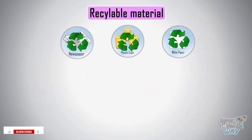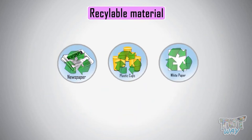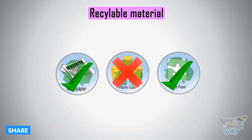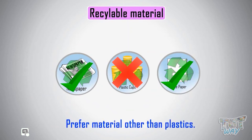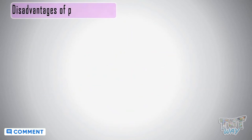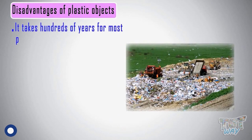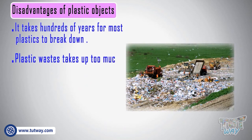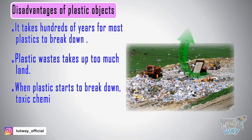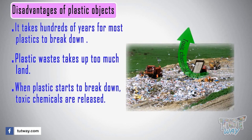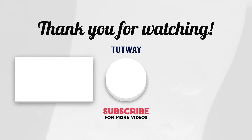Kids, we should always prefer recyclable materials over non-recyclable materials. Among recyclable materials, we should also prefer materials other than plastics, as plastics take a long time to break down and release toxic chemicals into the environment, which is very harmful for the earth. So always prefer recyclable materials and materials other than plastics.